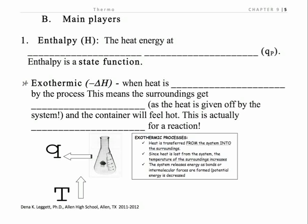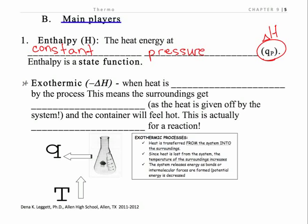Let's talk about the main players — the only reason they're really main players is because that's where we're going to focus our mathematics. But remember, concepts are so deeply important because cranking out a mathematical equation isn't very valuable if you don't understand the underlying structure and function and transformations going on at the chemical level. Enthalpy — we have seen it so many times — is heat energy at constant pressure. Most of our work is going to be at constant pressure, so we'll have a tendency to interchange delta H and Q at constant pressure. Enthalpy is a state function: final minus initial.